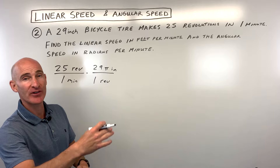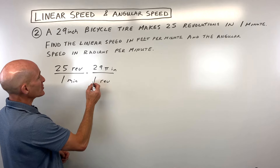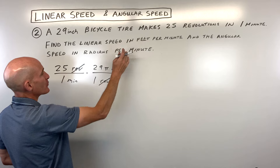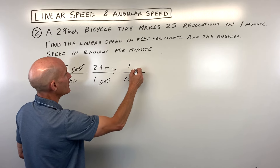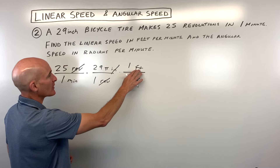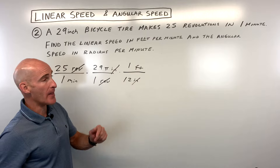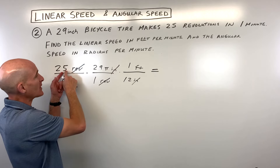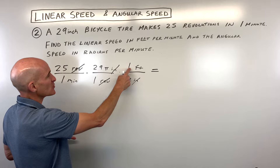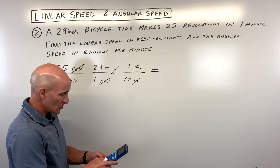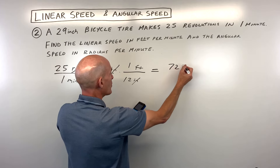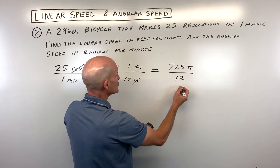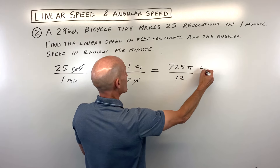Because pi times the diameter is the circumference — that's the distance once around the bicycle tire. The revolutions cancel, leaving inches per minute. We want feet per minute, so we go one step further: for every 12 inches, that's one foot. The inches cancel, and we're left with feet per minute. Multiplying across: 25 times 29 times 1 in the numerator gives 725 pi, and 1 times 1 times 12 in the denominator gives 12, so the exact answer is 725 pi over 12 feet per minute.